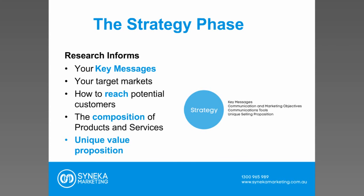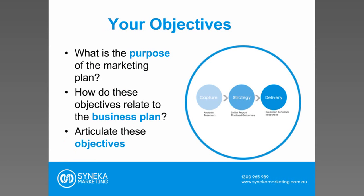Once we have all this data, we move into the strategy phase. This is where you start to hone in on your key messages, looking at who your target markets are, how you reach your potential customers and stakeholders, the composition of your products and services, and what that unique value proposition is. In the corporate world it tends to be called a unique selling proposition — I prefer to use the term unique value proposition. Ultimately it's about offering value to the people you want to reach — your clients, government if you're receiving funding, business partners, volunteers, members, board members, and staff.